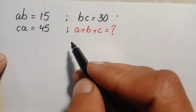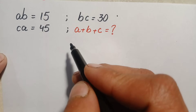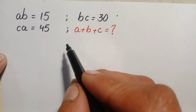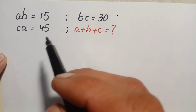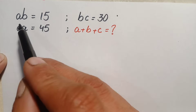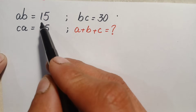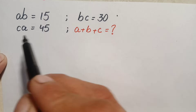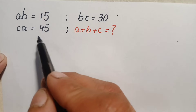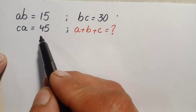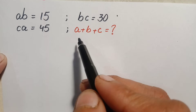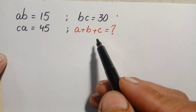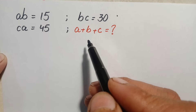Hello everyone, you are welcome to solve this beautiful algebra math problem: a times b is equal to 15, b times c is equal to 30, and c times a is equal to 45. Here we will try to find out the value of a plus b plus c.